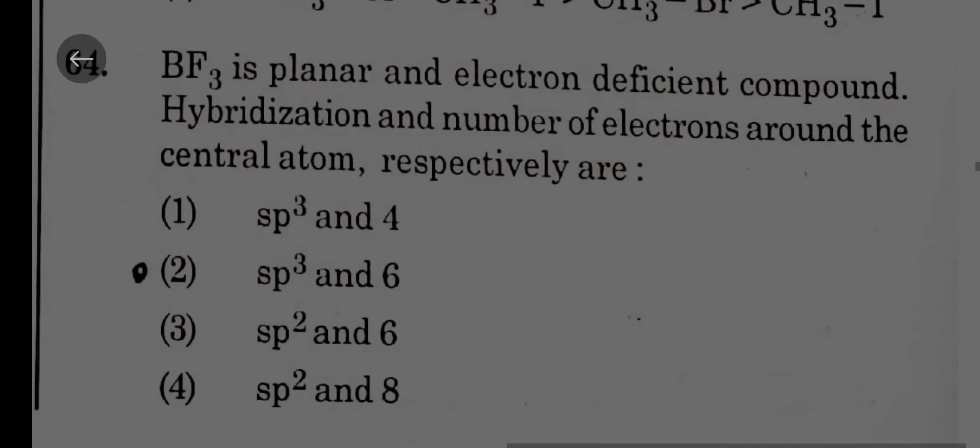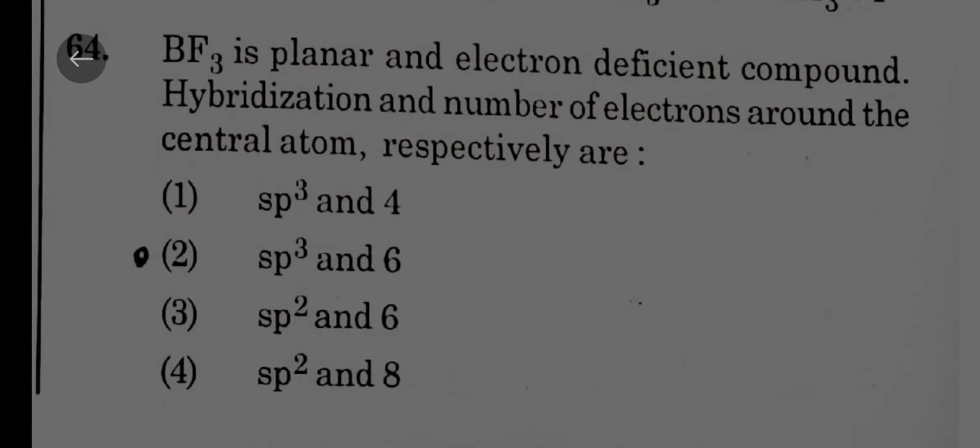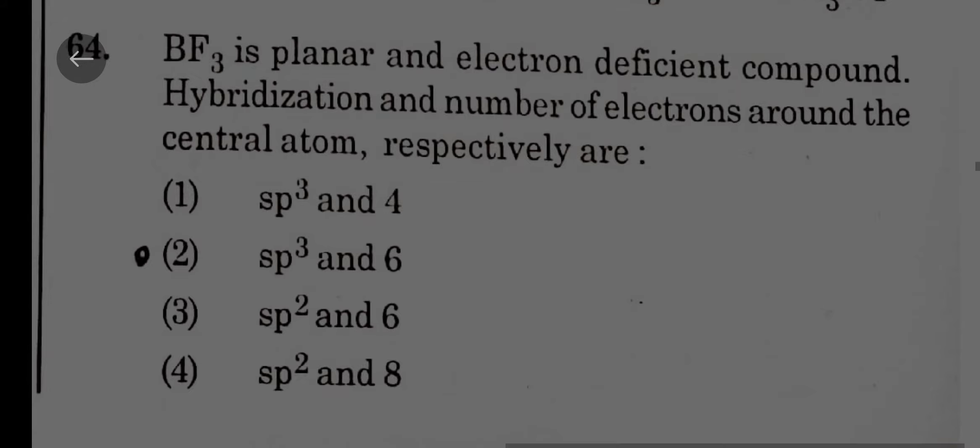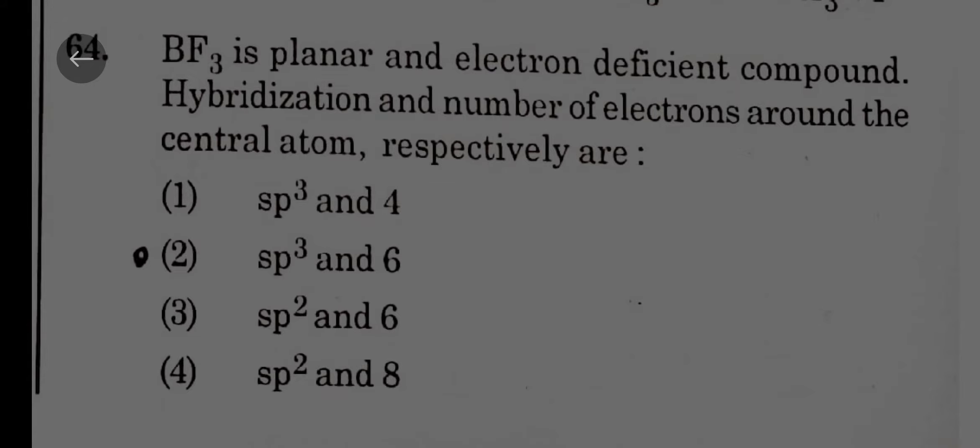BF3 is planar, so sp2 hybridization. Number of electrons: three electrons from boron, three electrons from fluorine, so number of electrons will be six. The number of electrons around the central atom will be six and hybridization is sp2.